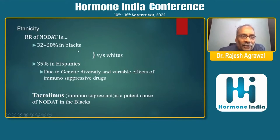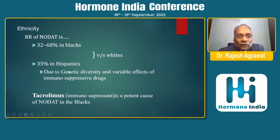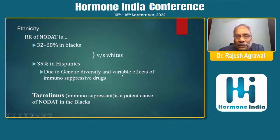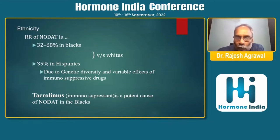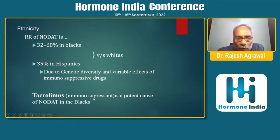Ethnicity-related risk of NODAT is 30–68% in Blacks and 35% in Hispanics as compared to Whites, probably because of genetic diversity and variable effects of immunosuppressive agents in these ethnic groups. Tacrolimus is an important cause of NODAT specifically in Blacks.